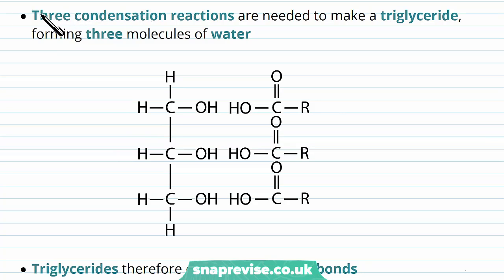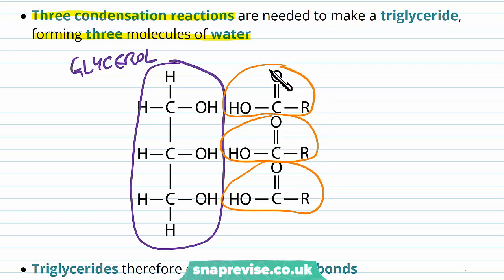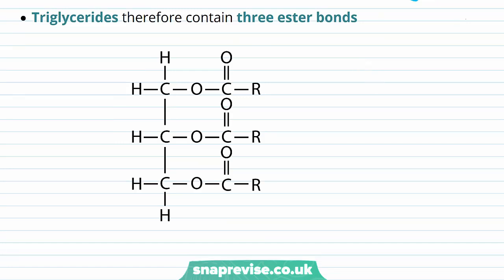In order to make the triglyceride, we need three condensation reactions, forming three molecules of water. Here we have our glycerol molecule, and on the right are three individual fatty acids — also known as carboxylic acids. You can see the carboxyl group for each of them, representing a chain of carbons and hydrogens. Every time we form one of these ester bonds, we remove a water molecule. So overall we form three water molecules and produce a triglyceride with three ester bonds, connecting one glycerol molecule to three fatty acids.